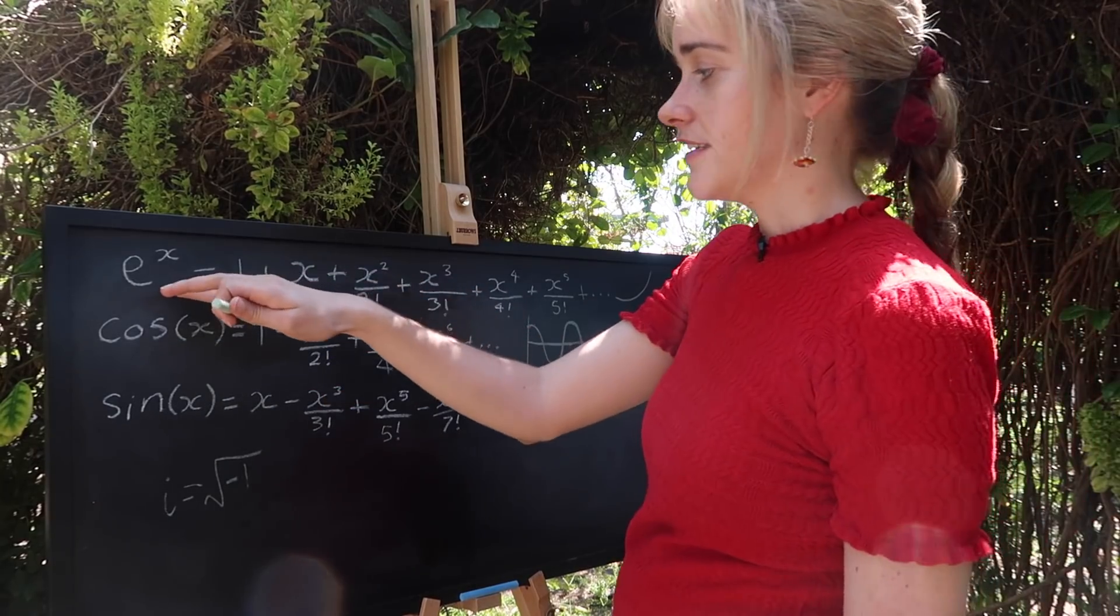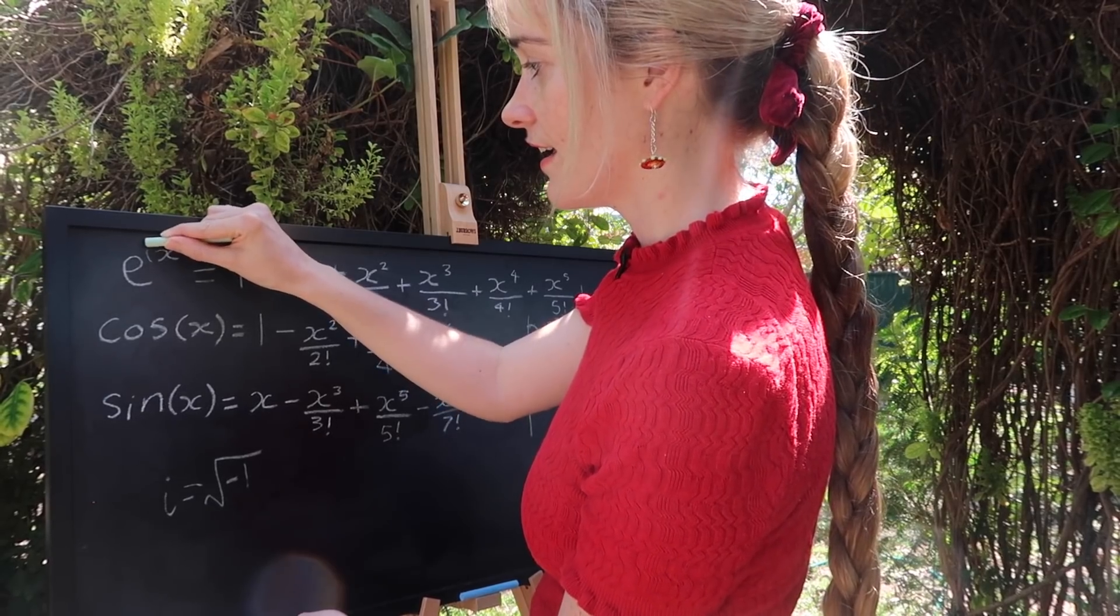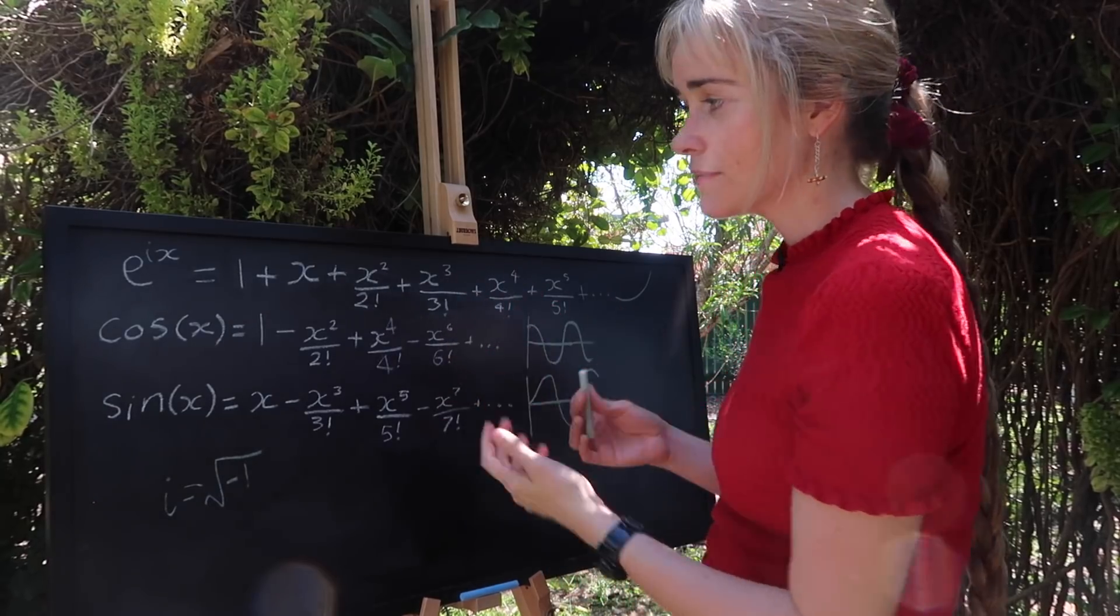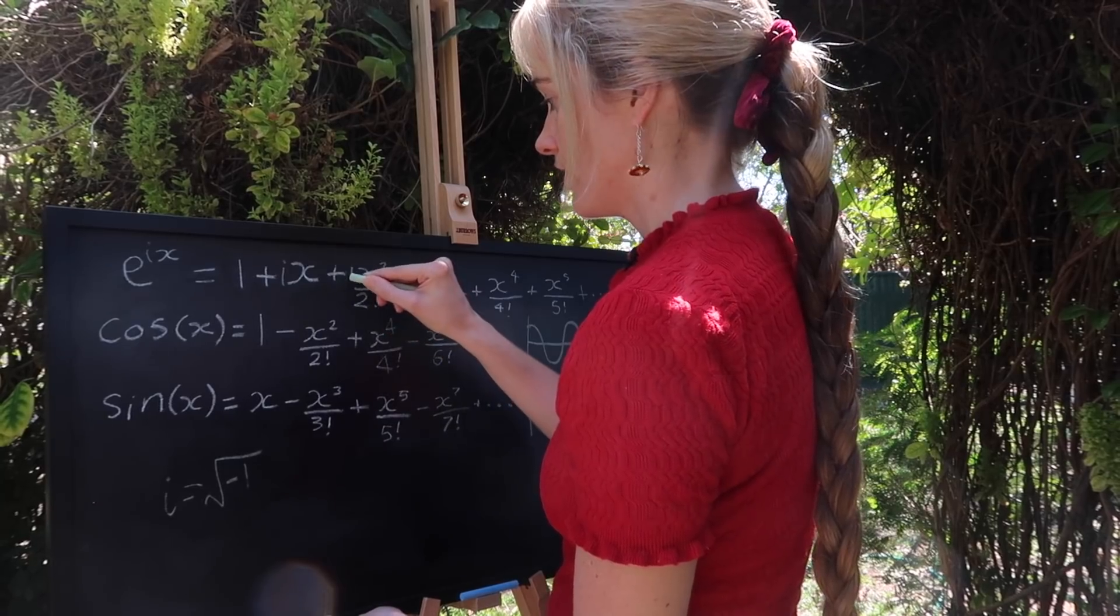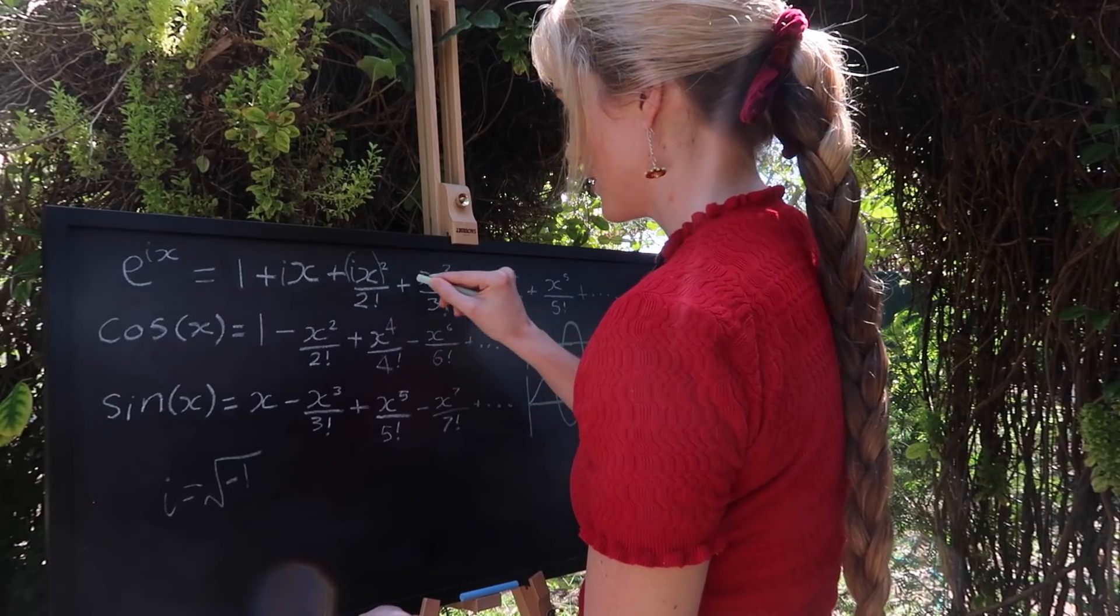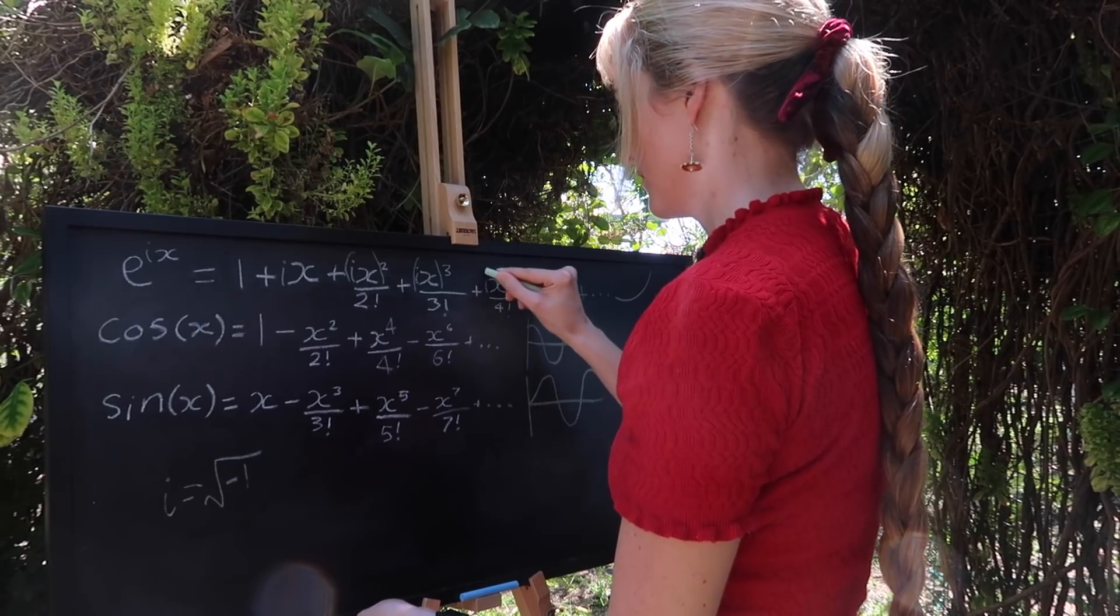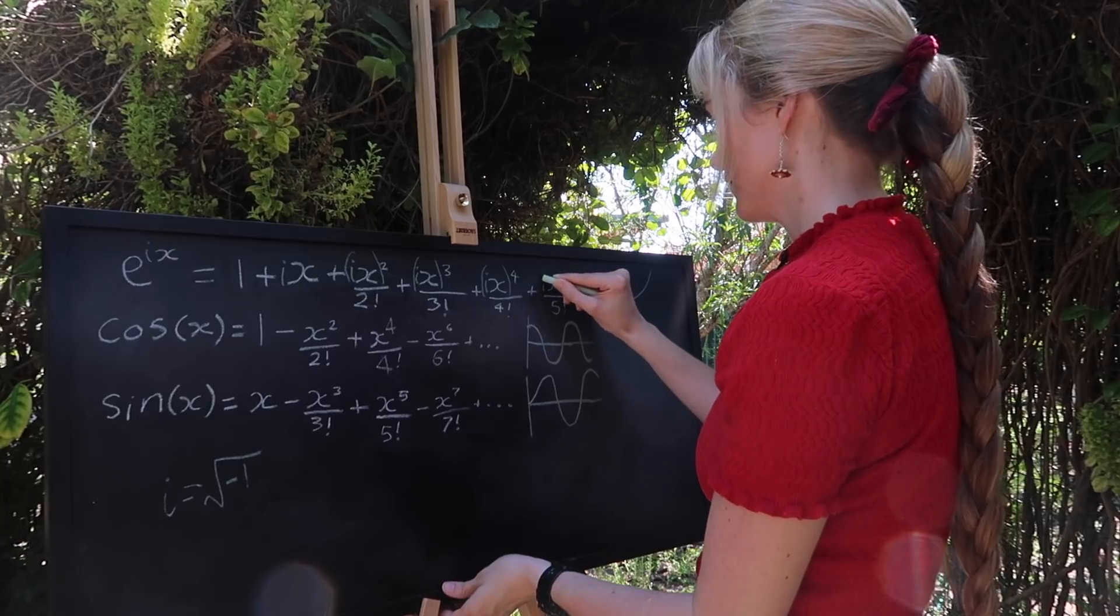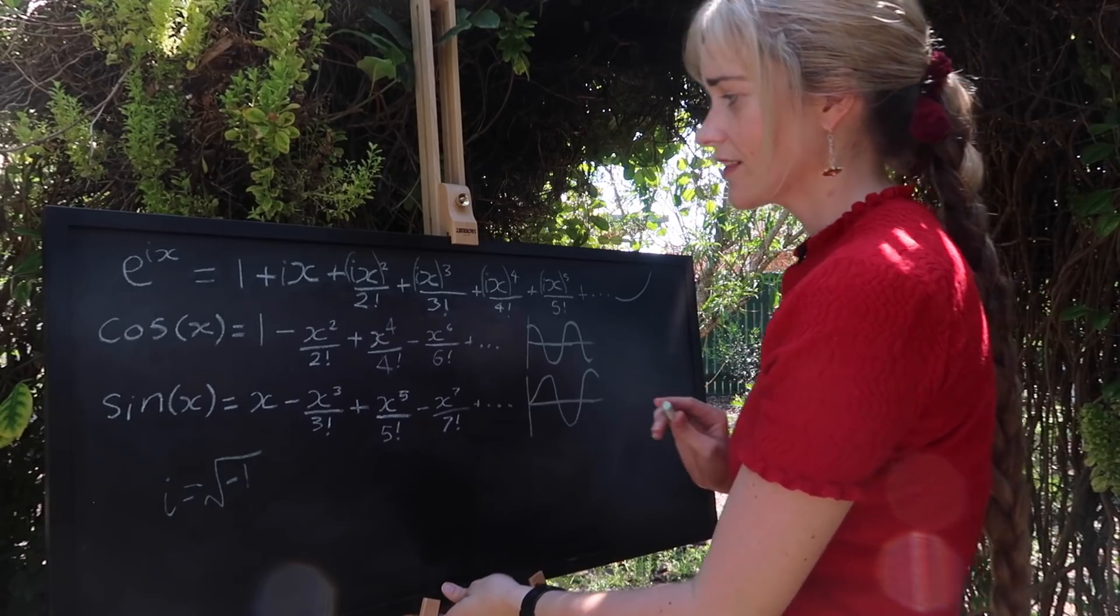We're going to actually rewrite this e to the x function as e to the i x. That means that anywhere there is an x here, I can replace it with an i x. Let's go through and do that. Keep our brackets right so that we know that that whole term is squared. Likewise here.